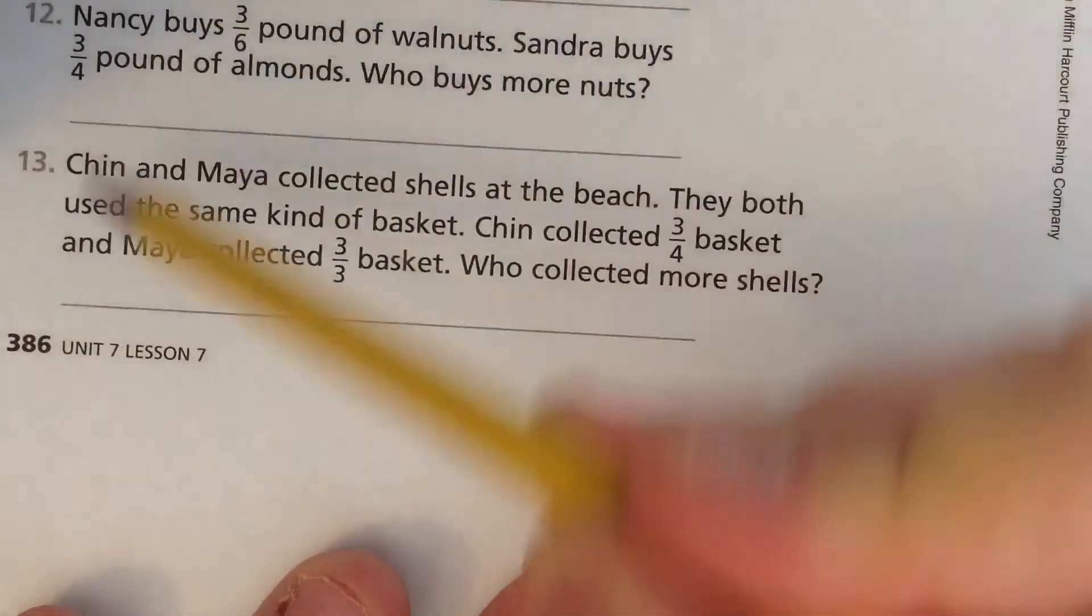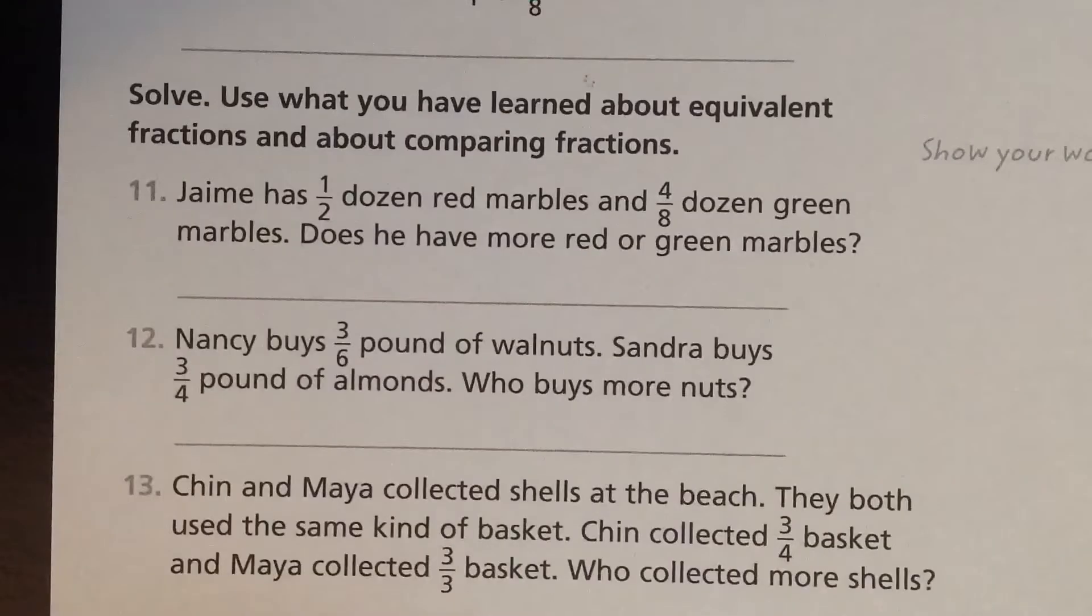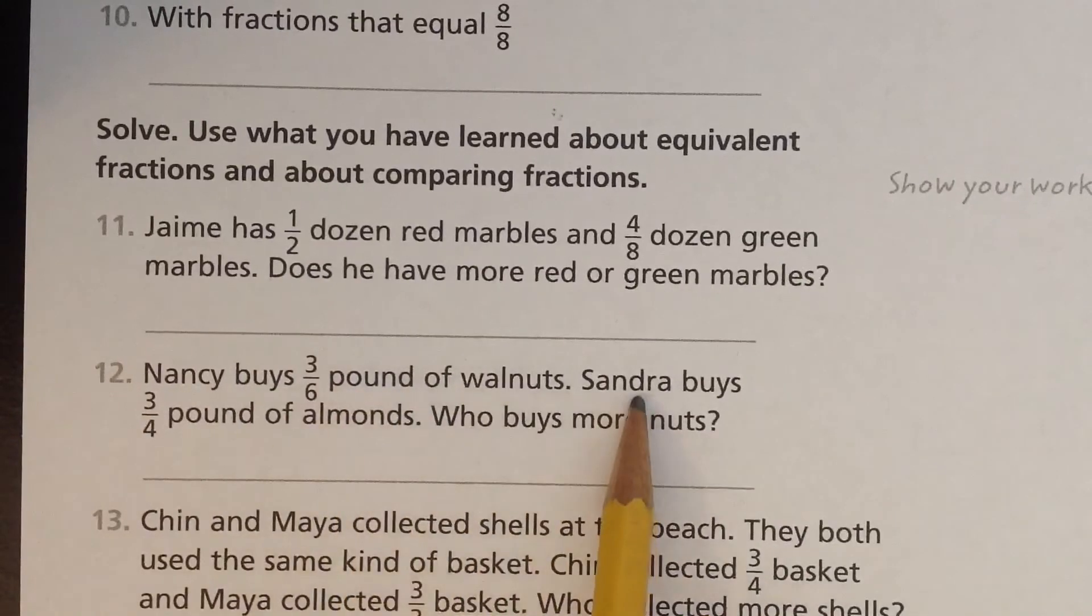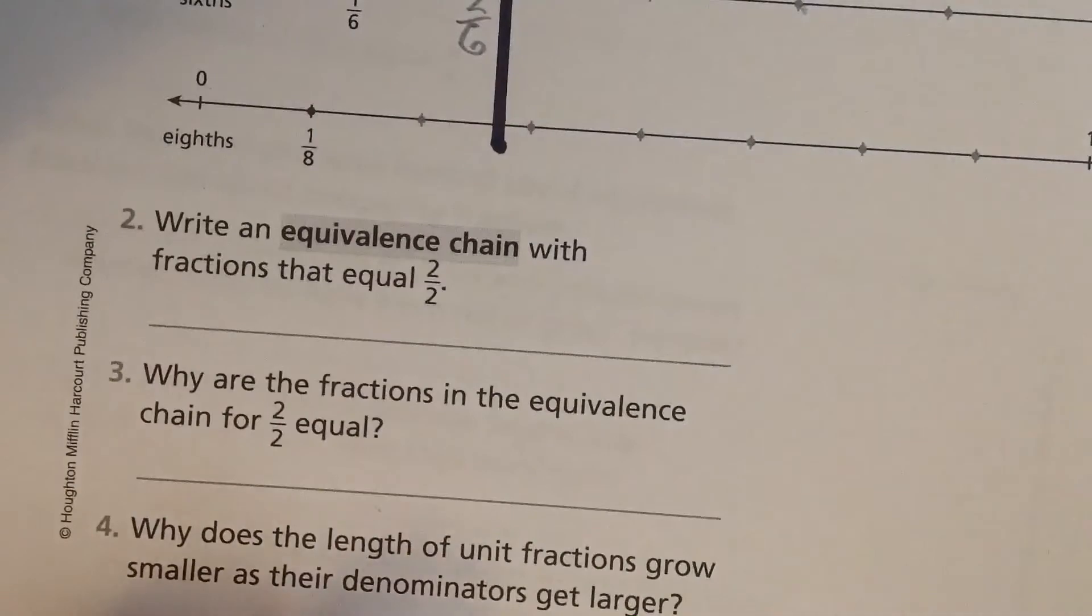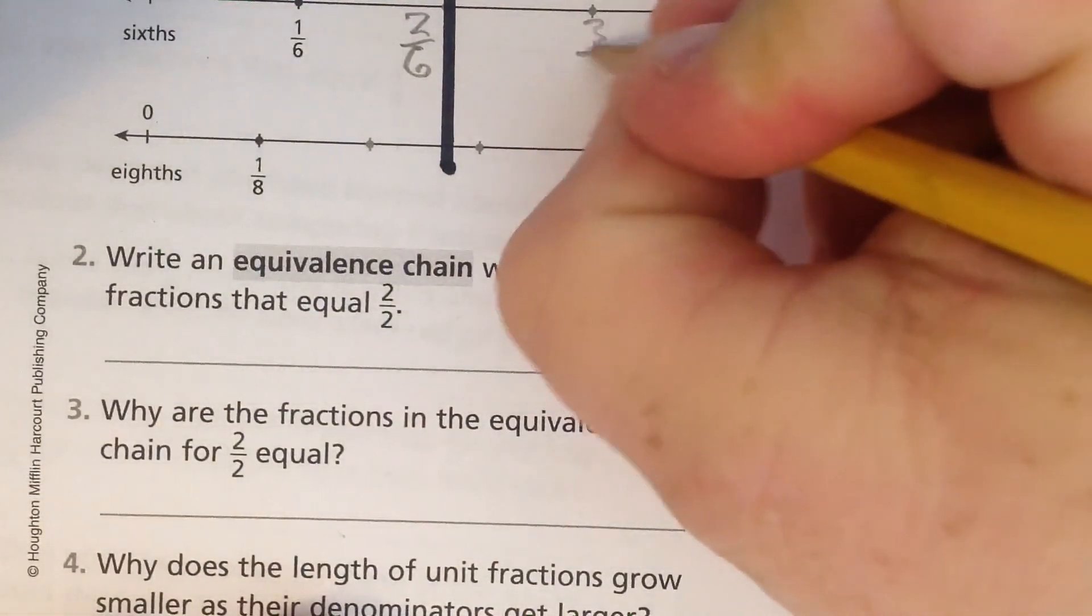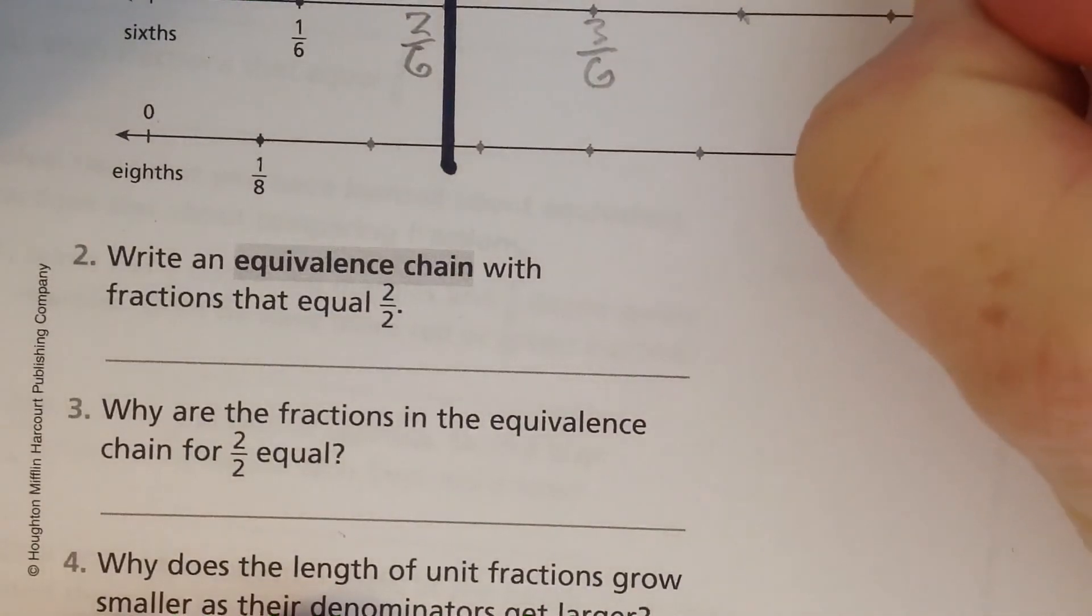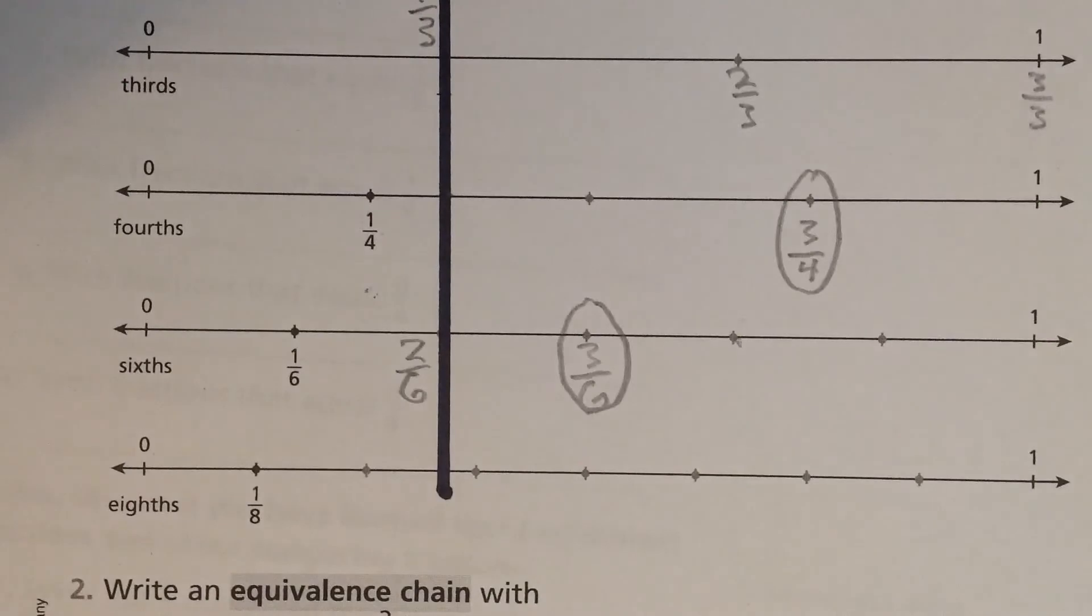And then we've got a couple word problems down here. And you can use this to help you. When it says Nancy buys three-sixths of a pound, but Sandra buys three-fourths of a pound, go find it. Here's three-sixths. Here's three-fourths. Which one's bigger? I wonder which one's bigger.